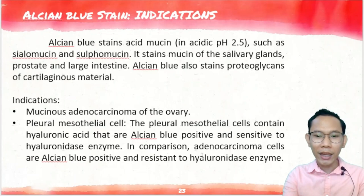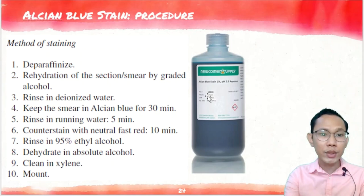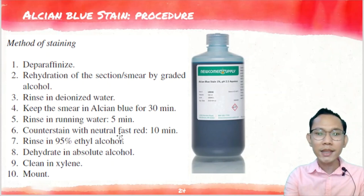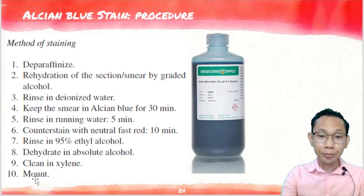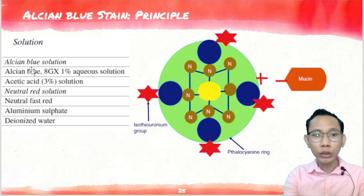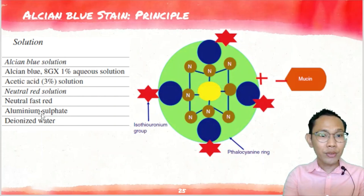The staining procedure for Alcian Blue: deparaffinize, rehydrate with graded alcohol, rinse in water, keep the smear in Alcian Blue for 30 minutes, rinse in running water for 5 minutes, counterstain with neutral fast red for 10 minutes, rinse in 95% ethanol, dehydrate in absolute alcohol, clear, then mount. The Alcian Blue solution is composed of 1% aqueous Alcian Blue and acetic acid. The counterstain — neutral red solution — is composed of neutral fast red, aluminum sulfate, and deionized water.